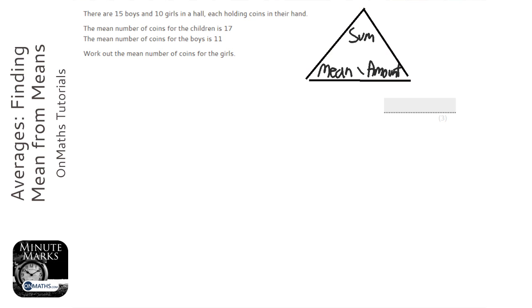Now the reason it's helpful to know this as a triangle is, sometimes in the advanced questions, they will give you the mean and the amount, or the mean and the sum, and they'll ask you for something else - they might ask you for the amount or the sum.